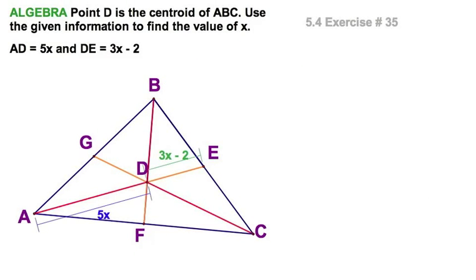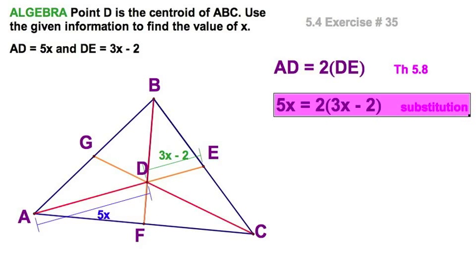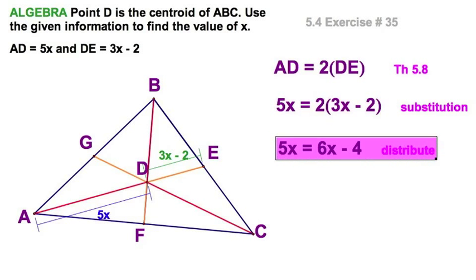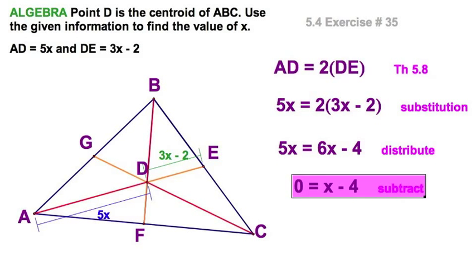This one's a little bit different. Look what I'm given now. I'm given this segment AD and this segment DE. Remember, this segment is the two-thirds segment. This is the one-third segment of the median. So I guess these are in the ratio of two parts to one part or two to one. So let's set it up. Then AD is equal to two of these. And then substitution. And it's just arithmetic. And there you go.